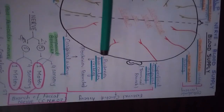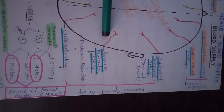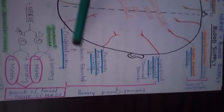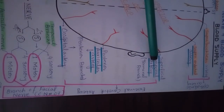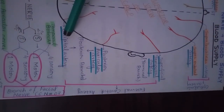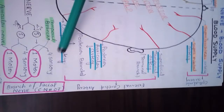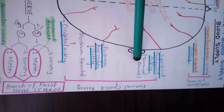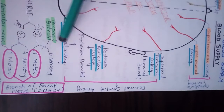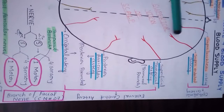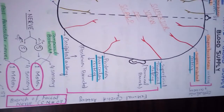The fourth artery is the posterior auricular artery, and the fifth is the occipital artery. The superficial temporal artery is a terminal branch of the external carotid artery. The posterior auricular artery and occipital artery are both posterior branches of the external carotid artery. In this way, the blood supply of the scalp has been explained.